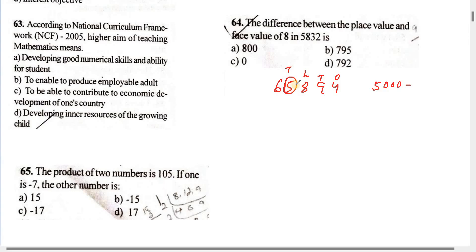The place value minus face value gives 5,000 minus 5. You can use this method or concept to solve similar questions about place value and face value.